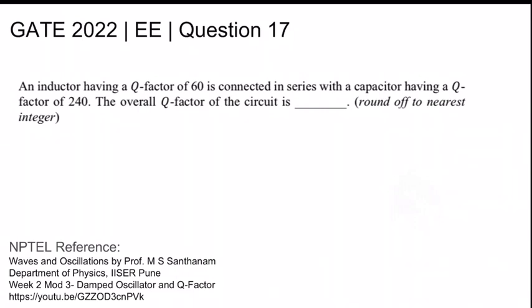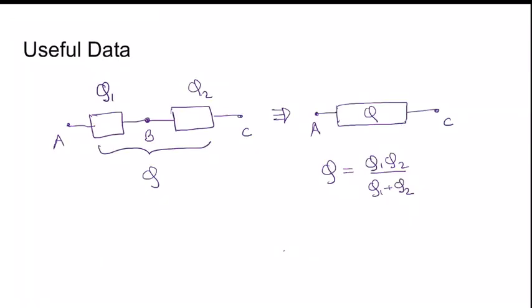The NPTEL course is Waves and Oscillations by Professor M.S. Santhanam, Department of Physics, IISER Pune. Useful data: if you have a passive element having quality factor Q1 connected in series with another passive element having quality factor Q2, then the overall effective quality factor is given by Q equals Q1 times Q2 divided by Q1 plus Q2.